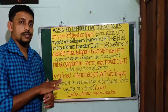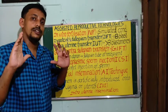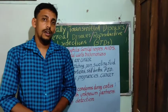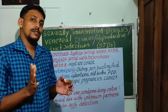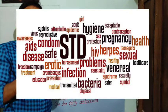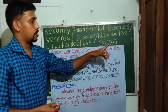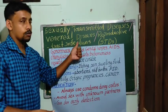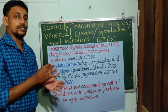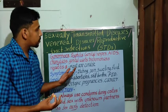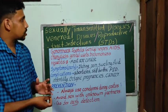Now let's go to the last part of this chapter, dealing with sexually transmitted diseases. Diseases which are transmitted through sexual intercourse are known as sexually transmitted diseases or STDs. STDs are otherwise known as venereal diseases or reproductive tract infections. These are infections, diseases, or disorders caused by sexual intercourse.